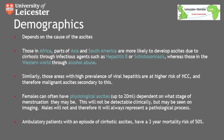Patients can present with this problem all over the world, but the cause will vary depending on geographical location. Those in Africa, parts of Asia, and South America are much more likely to develop ascites due to cirrhosis from infectious agents such as viral hepatitis B or the parasite schistosomiasis, whereas in the Western world the most likely cause is cirrhosis through alcohol abuse. Areas with a high prevalence of viral hepatitis are also at higher risk of hepatocellular carcinoma and therefore may develop a malignant ascites.